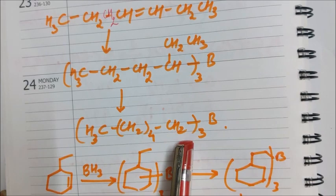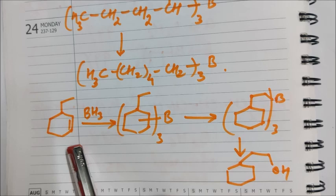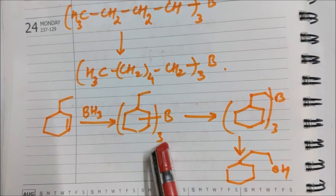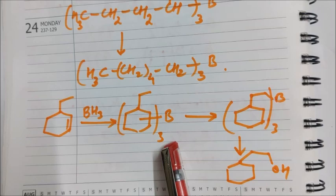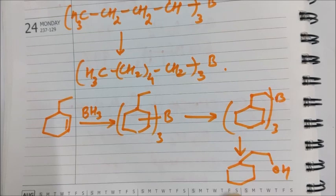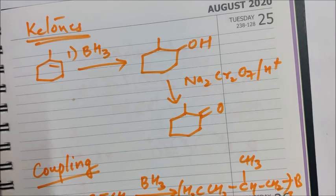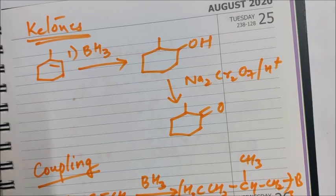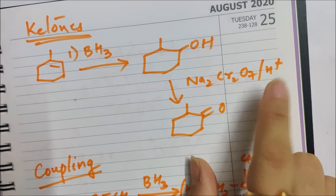At high temperature, isomerization will be seen. Here is another example with a cyclic molecule. Boron gets itself attached to this double bond. Due to high temperature, isomerization takes place — the proton from here comes here, and boron gets attached to the outside of the ring, which on hydrolysis forms this kind of alcohol outside the ring instead of within it. Diborane can also form ketones — diborane forms alcohol, which can be oxidized with any oxidizing agent. In this case, I have used Jones reagent to oxidize it to a ketone.